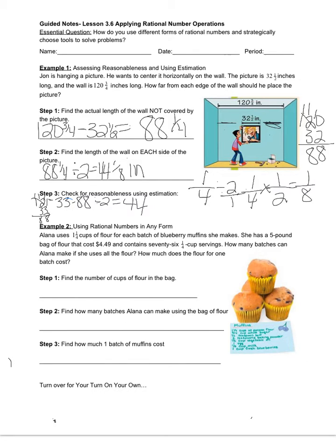For our second example, we're going to look at using rational numbers in any form. As we've talked about in class, rational numbers come in the form of decimals and fractions — we can take a fraction and turn it into a decimal, and vice versa. We're going to look at this muffin problem. Alana uses 1¼ cups of flour for each batch of blueberry muffins. She has a 5-pound bag of flour that costs $4.49 and contains 76 quarter-cup servings. How many batches can she make, and how much does the flour for one batch cost?